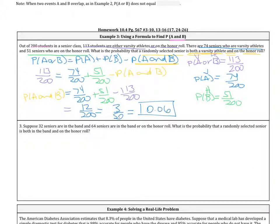Now let's look at the next example — go ahead and try this out. Suppose 32 seniors are in the band and 64 seniors are in the band or on the honor roll. What is the probability that a randomly selected senior is both in the band and on the honor roll? You're using the 200 students and the 51 seniors on the honor roll from before.